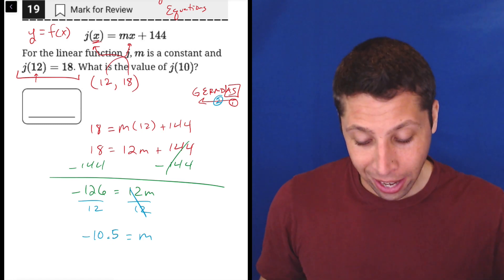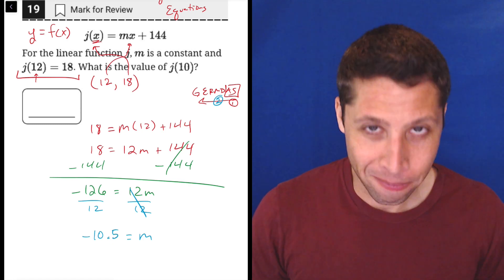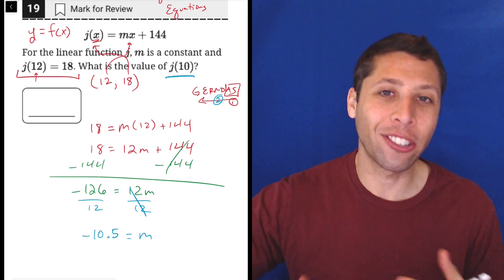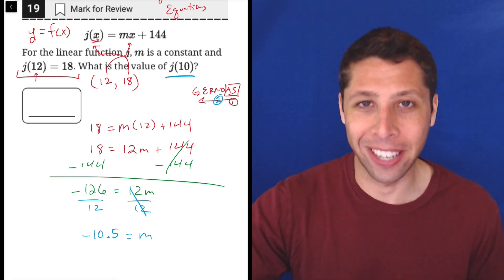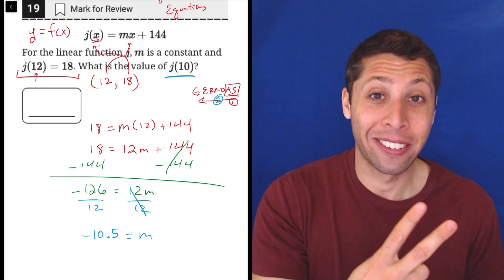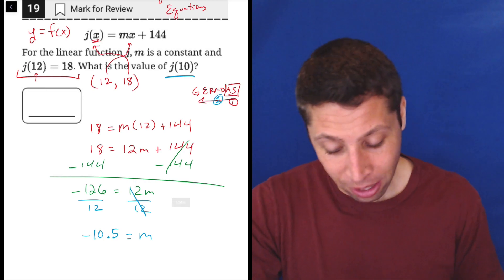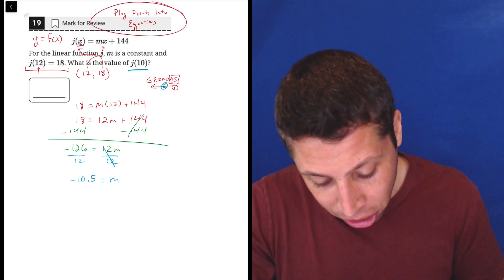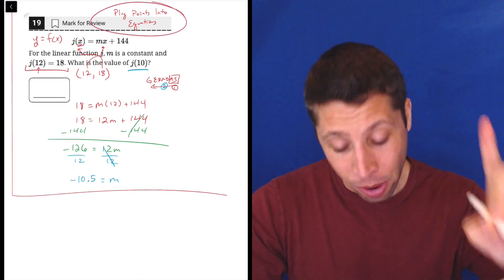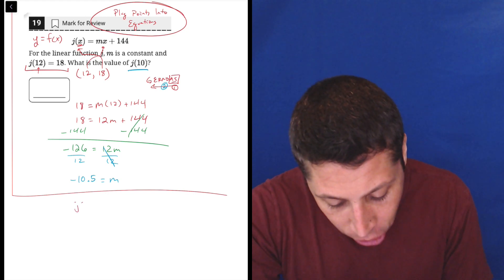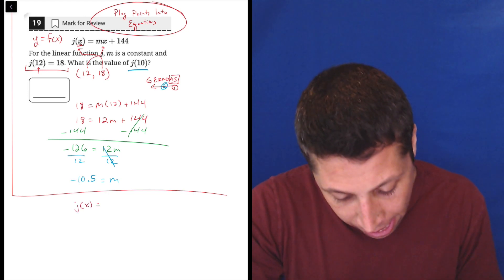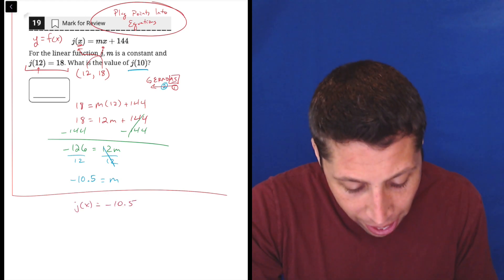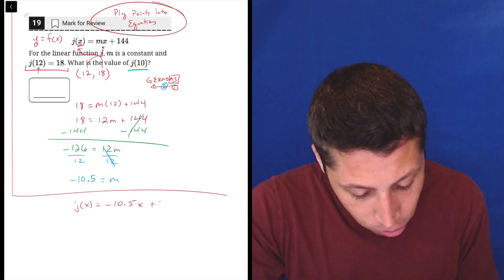And that's not our answer. That's not our answer because we don't want m. They want j of 10. So this is actually asking now for the y coordinate of a second point. A second point. So we can get that though. We just need to kind of go back to our starting point. What was our main strategy? Plug points into equations. Now we have the full j of x equation. It's negative 10.5 times x plus 144.